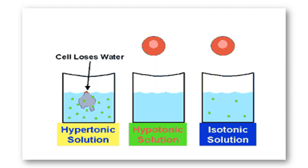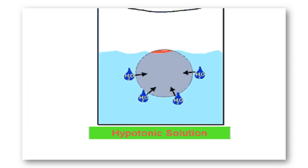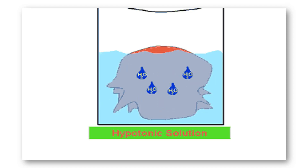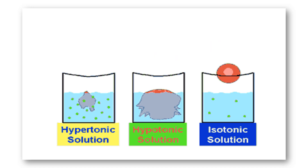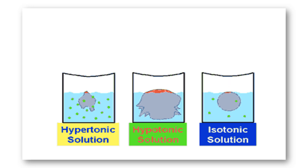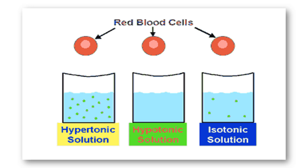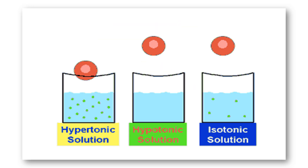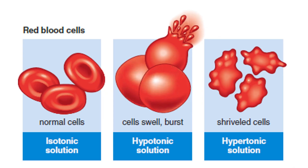In the laboratory, cells are normally placed in an isotonic solution, in which the cell neither gains nor loses water — the concentration of water is the same on both sides of the membrane. As a review: when red blood cells are placed in an isotonic solution, the cell is normal with no gaining or losing of water. When placed in a hypotonic solution, the red blood cells tend to swell or burst. And when placed in a hypertonic solution, the cells shrivel and shrink.